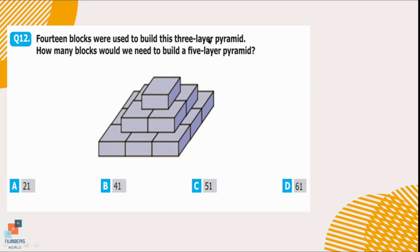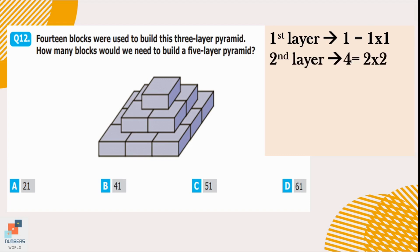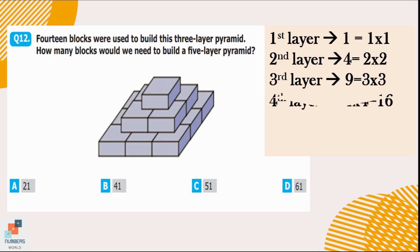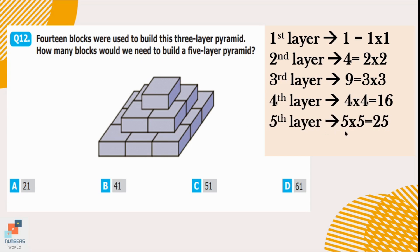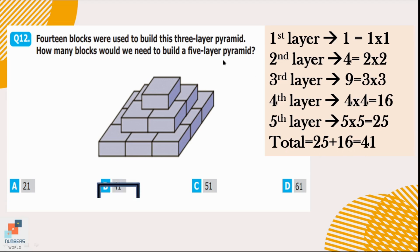Question number 12. 14 blocks were used to build a three-layer pyramid. How many blocks would be needed to build a five-layer pyramid? The first layer has 1 block (1×1), the second has 4 blocks (2×2), and the third has 9 blocks (3×3). Following the same pattern, the fourth layer will have 16 blocks (4×4) and the fifth layer will have 25 blocks (5×5). We already have 14 blocks in three layers, so we add the blocks for the fourth and fifth layers: 16 plus 25 equals 41. So, 41 blocks are needed — option B.